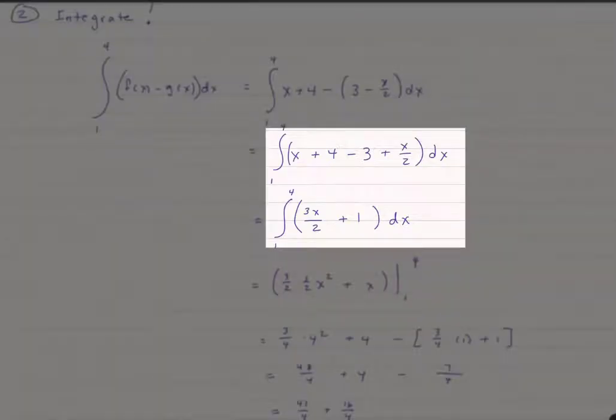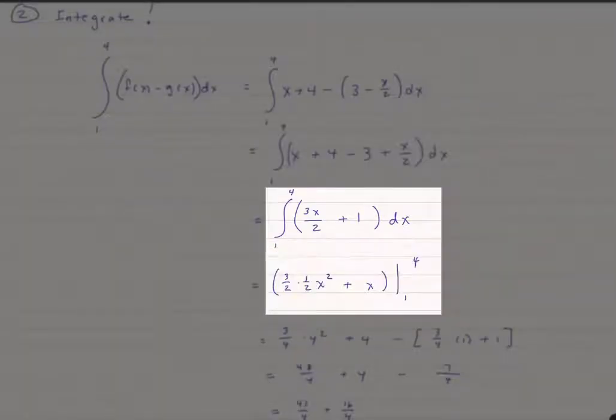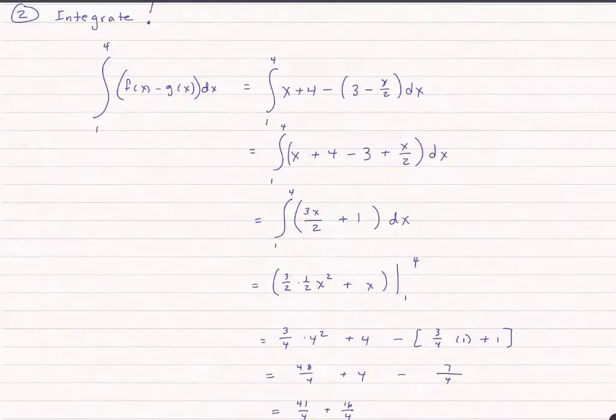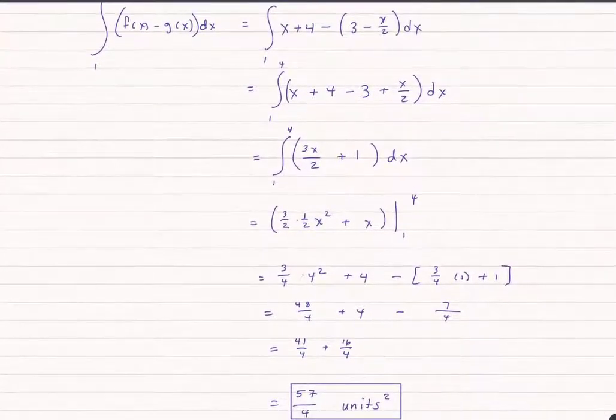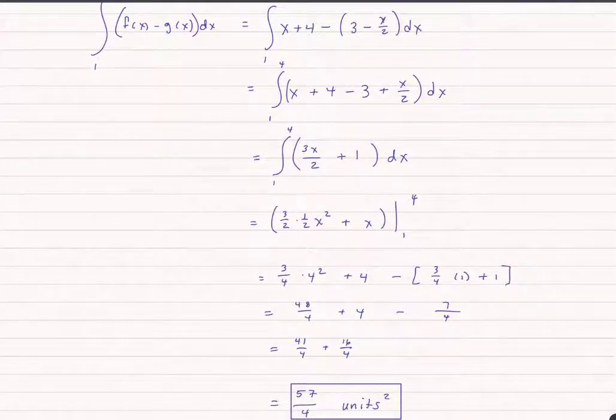We combine like terms, go ahead and integrate, evaluate at 1 and 4, do a little bit of arithmetic, and we finally get to the answer of 57 divided by 4. It's units squared. Whatever we're talking about, this is area, so it's always going to be square units.